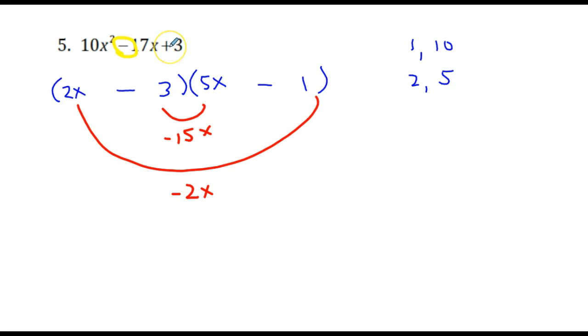So the correct factoring for this trinomial is the quantity of 2x minus 3 times the quantity of 5x minus 1.